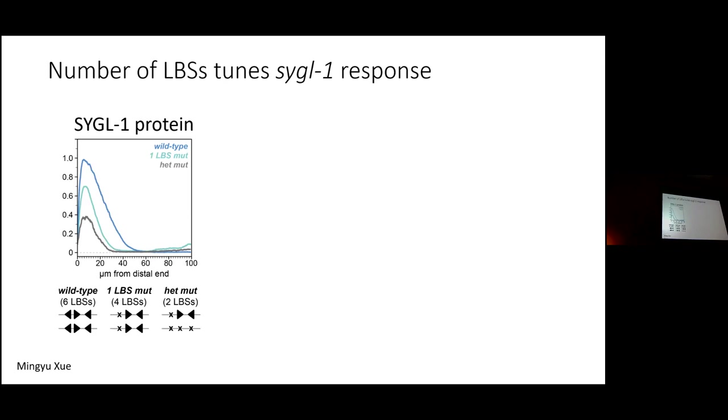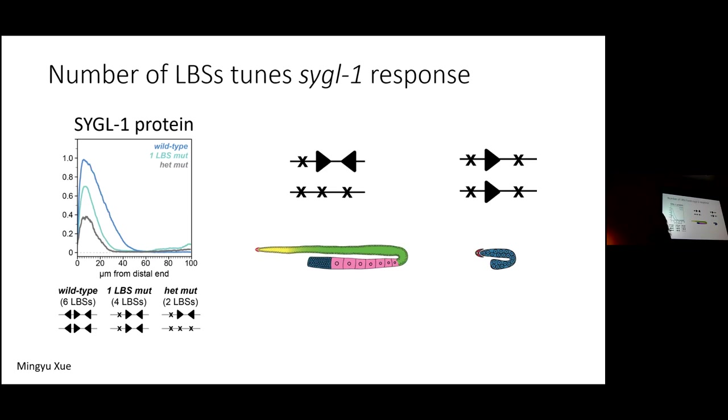However, this experiment also shows us the LBS regulation of Sigil-1 is not only based on number. As I mentioned, this mutant with the two LBSs together, only nine base pairs apart, they give us a decent quantity of Sigil-1 protein that can maintain a functioning germline in adults. But two LBSs on the separate chromosomes, especially if they're these two LBSs in particular, are like having no Sigil-1 at all. So from this, we conclude it's not just LBS number. There's also a greater ability to turn on the Sigil-1 gene if these binding sites are close together.